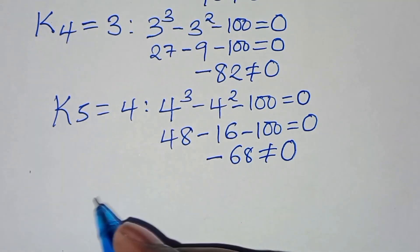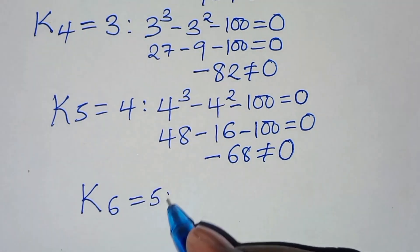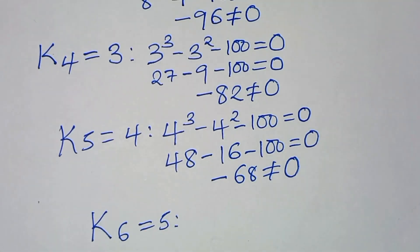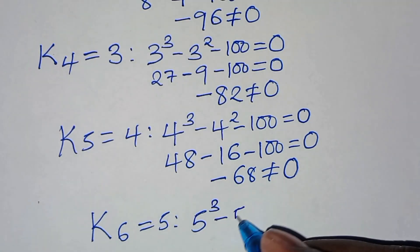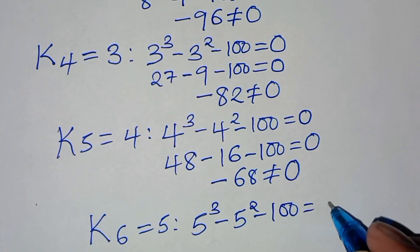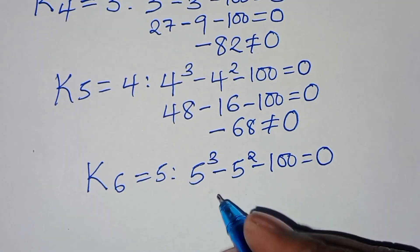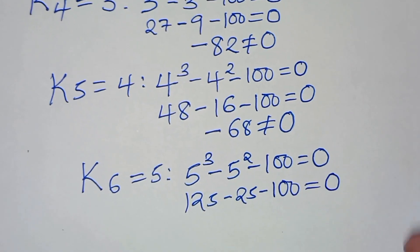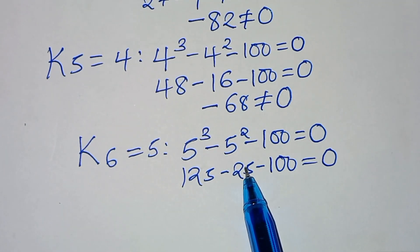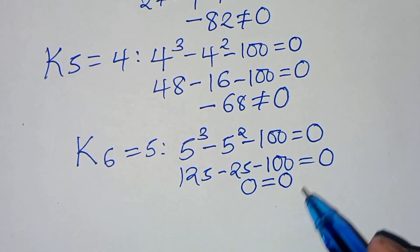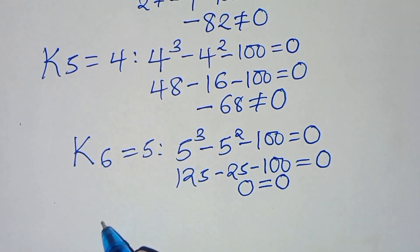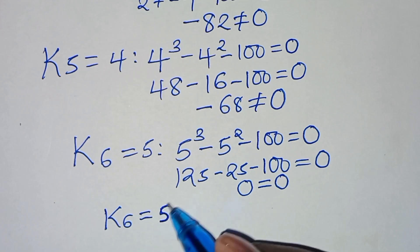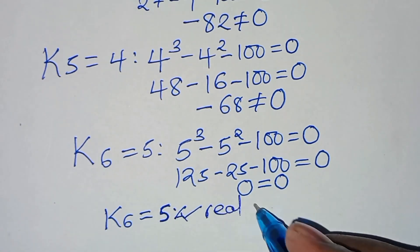Let's move to k₆ equal to 5. Substituting into the cubic: 5³ minus 5² minus 100 equals 125 minus 25 minus 100. So 125 minus 25 is 100, and 100 minus 100 equals 0. The left hand side equals the right hand side, so k₆ equal to 5 satisfies the equation — 5 is one real solution.